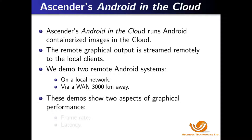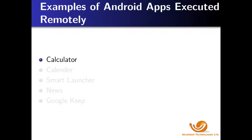These demos show two aspects of graphical performance: frame rate and latency. We will now see examples of Android apps executed both remotely on a local network and via a wide area network 3,000 kilometers away.